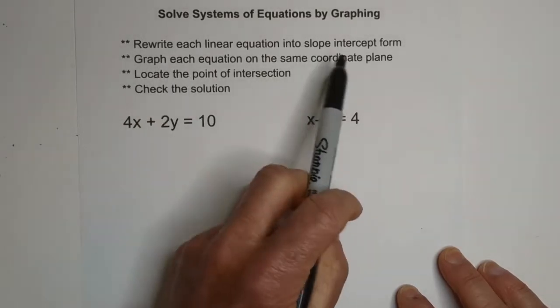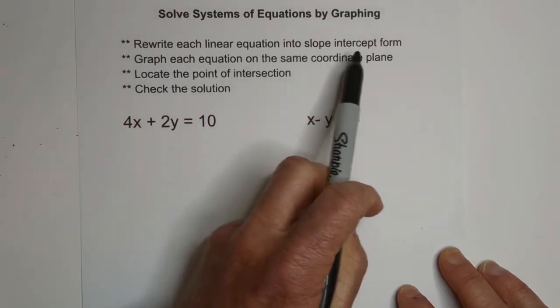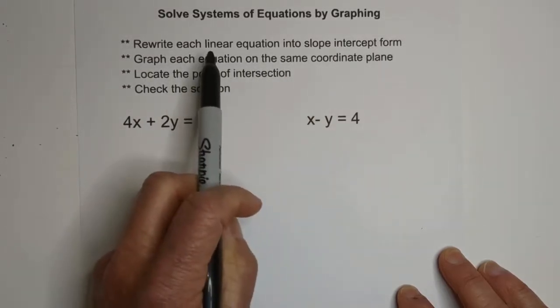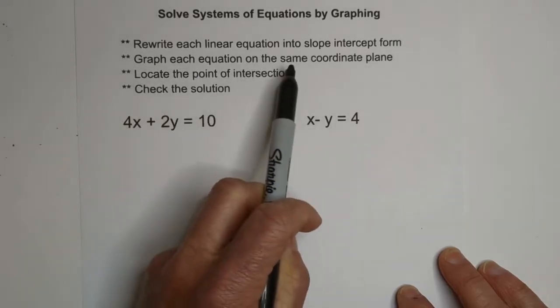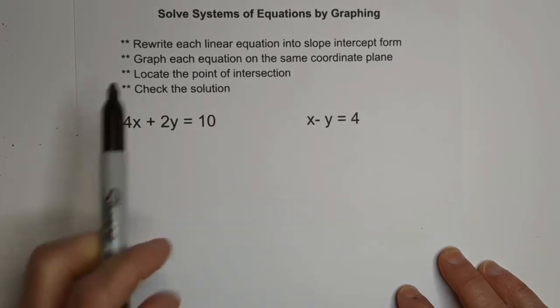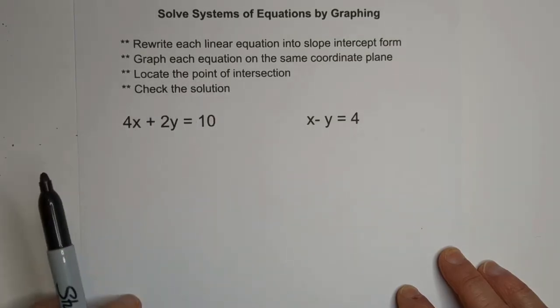First, if it's not in slope intercept form, we're going to write each linear equation into slope intercept form. Next, we'll graph each equation on the same coordinate plane. We'll locate the point of intersection and then we'll check the solution.